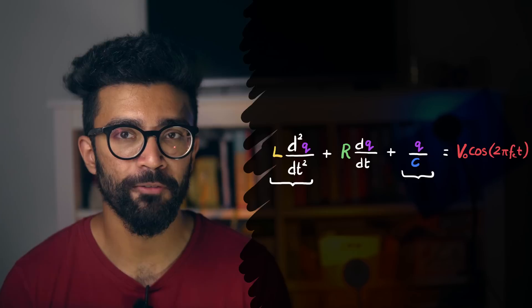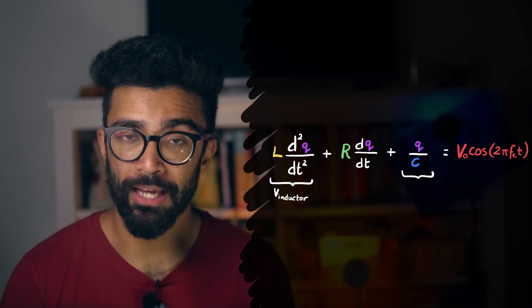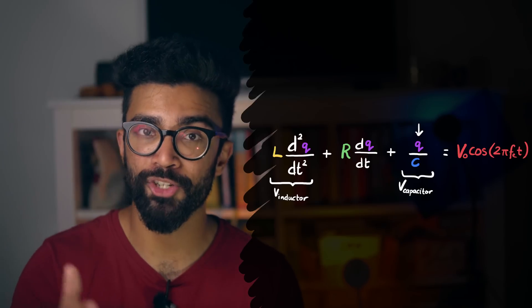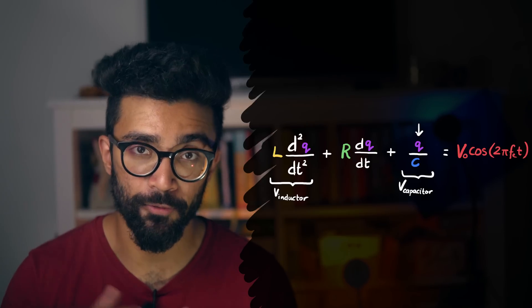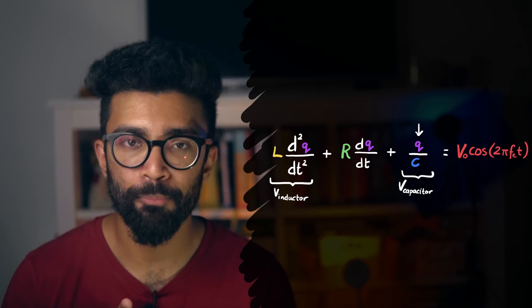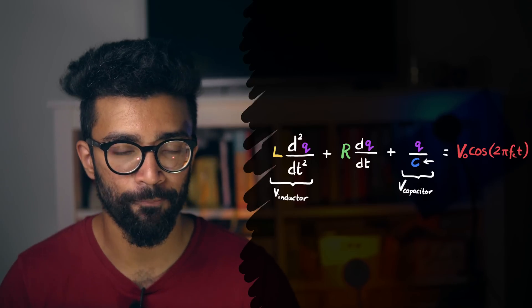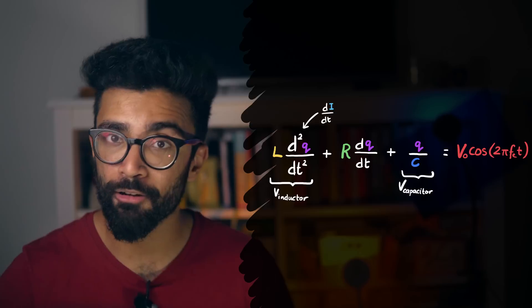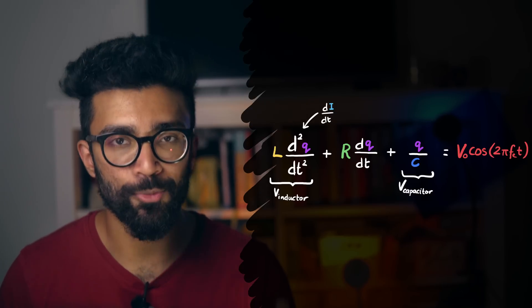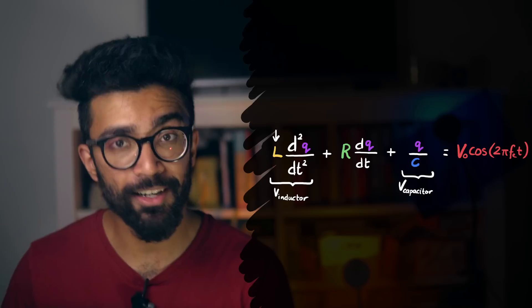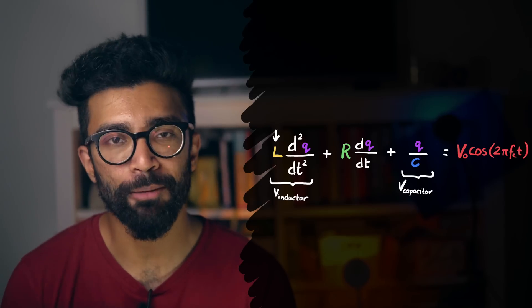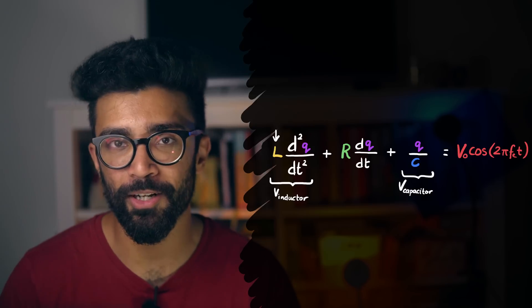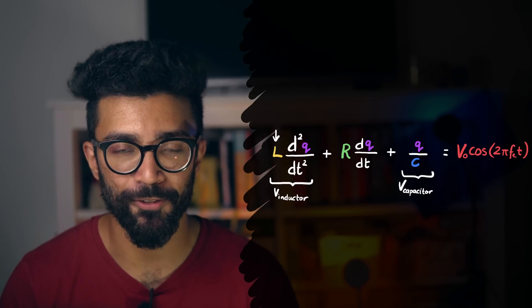And in very similar ways, these two terms describe the voltage across the inductor and the capacitor respectively. A capacitor's voltage is dependent on the charge stored on the plates of the capacitor, and a property known as the capacitance of the capacitor, while an inductor's voltage is dependent on how quickly the current through the inductor is changing, as well as a property known as the inductance of the inductor. I'll make a separate video on capacitors and inductors as well as capacitance and inductance at some point as well, so let me know in the comments down below if you'd like to see that.